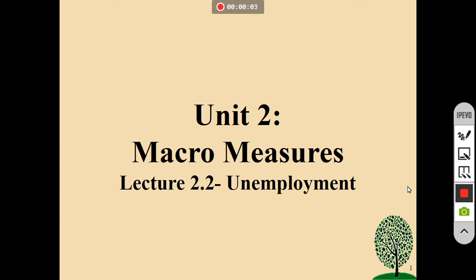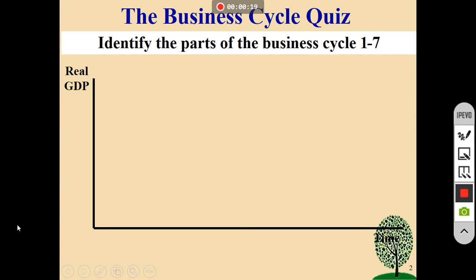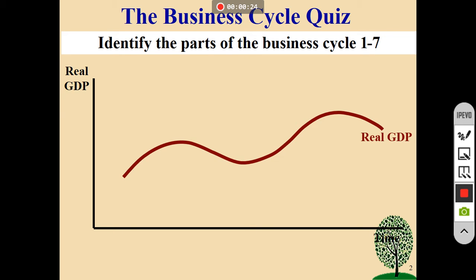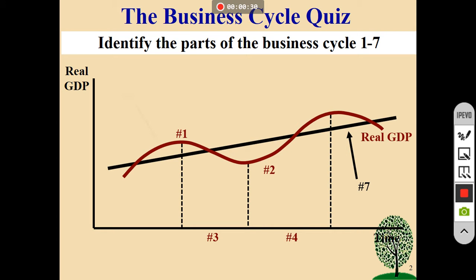Hey AP Macro Kids! Next lecture we're going through macro measures — how do we measure major things in our economy. Today we talk about unemployment. As a quick review, the business cycle goes up and down through time. There are a bunch of different spots on here, so pause the video and see if you can figure them out.